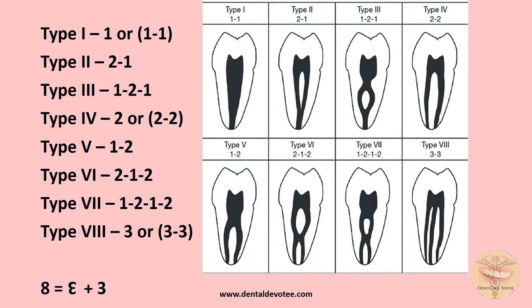Now how do we remember Vertucci's classification? Instead of '1-1' we simply call it 1, instead of '2-2' we say 2, and instead of '3-3' we say 3. So Types 1, 4, and 8 correspond to single numbers 1, 2, and 3. Type 1 is 1; Type 4 — half of 4 is 2; and Type 8 — if divided by a vertical line forms a mirror image of 3.